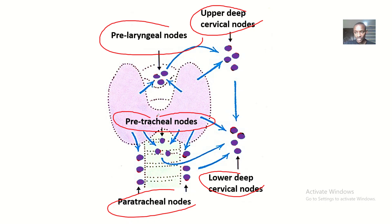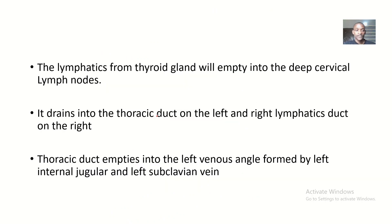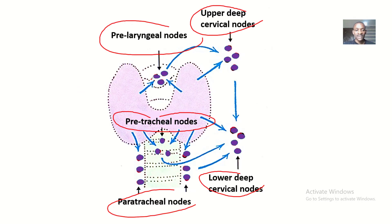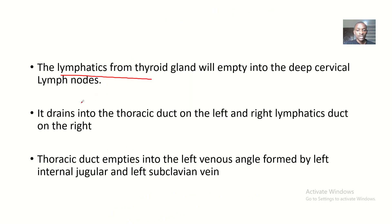This lecture will help you arrange this knowledge in your head. Lymphatics from the thyroid gland will empty into the deep cervical lymph nodes. We have upper deep cervical lymph nodes and lower deep cervical lymph nodes, meaning both groups will receive lymph from the thyroid gland.